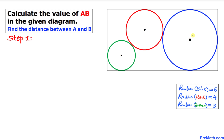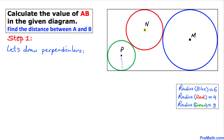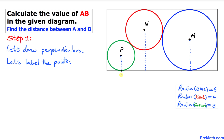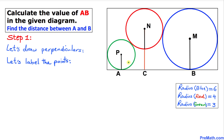Let's go ahead and label these centers. I'm going to call the center of the blue circle M, the red circle N and the green circle P. Now we are going to draw the perpendiculars from these centers onto the horizontal line. We label the points on this horizontal line: point A, point B, and point C.